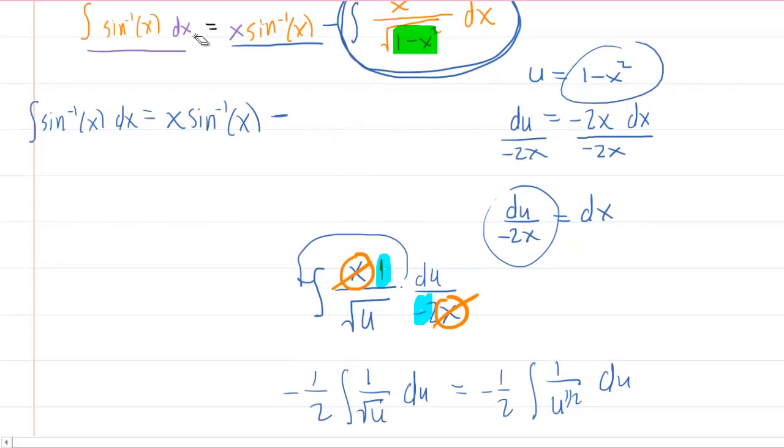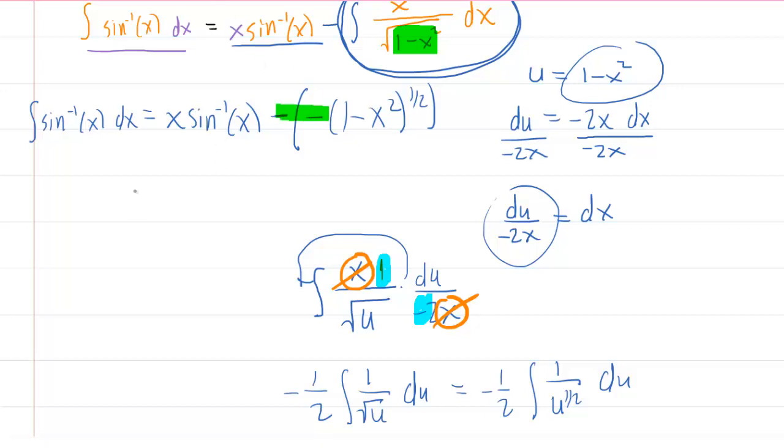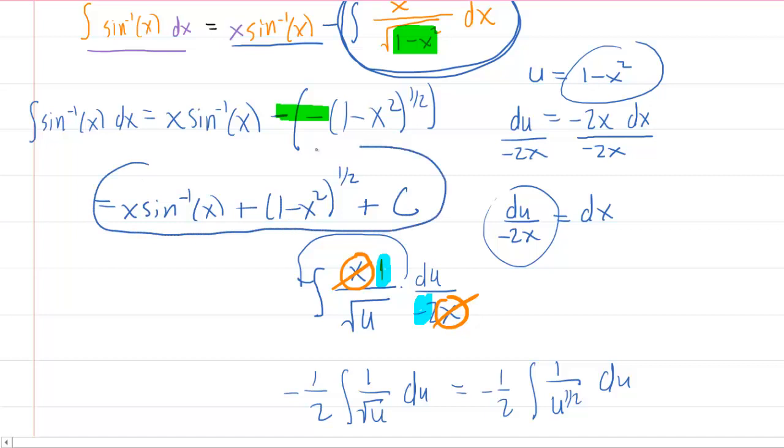And if you notice, you're about to subtract a negative 1 minus x squared to the half. And so this double negative right here will actually make it into a plus sign. So your final answer would be x arc sine of x plus 1 minus x squared to the power of a half. Don't forget your constant of integration. So you could write it like that.